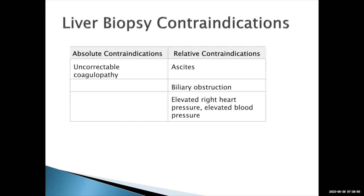There are contraindications to a liver biopsy. An absolute contraindication is an uncorrectable coagulopathy — for example, an INR of 8 or a platelet count of 2,000 that cannot be corrected, which carries a very high risk of hemorrhage. Relative contraindications include ascites, because puncturing the liver capsule with ascites present may cause bleeding outside the capsule. Biliary obstruction is another relative contraindication — a dilated biliary system could cause a biliary leak. Elevated right-sided heart pressures also increase the risk of bleeding, similar to renal biopsies.